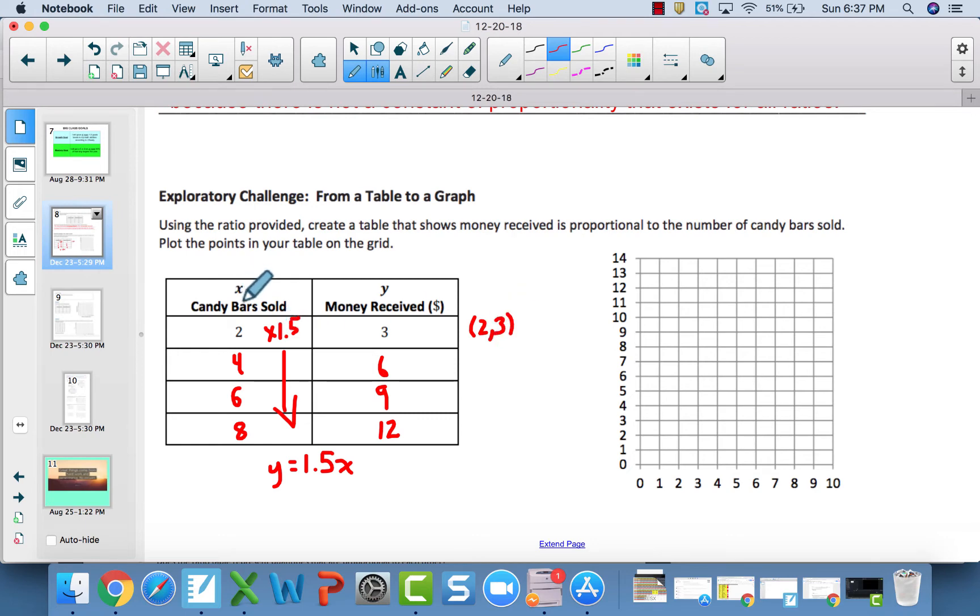For instance, this first one: x is 2, y is 3. The second one would be 4, 6, and so on. Set up and label your graph, then plot the points. You're going to notice something. Before you move on, please graph and do your labels, then come back and check the video.